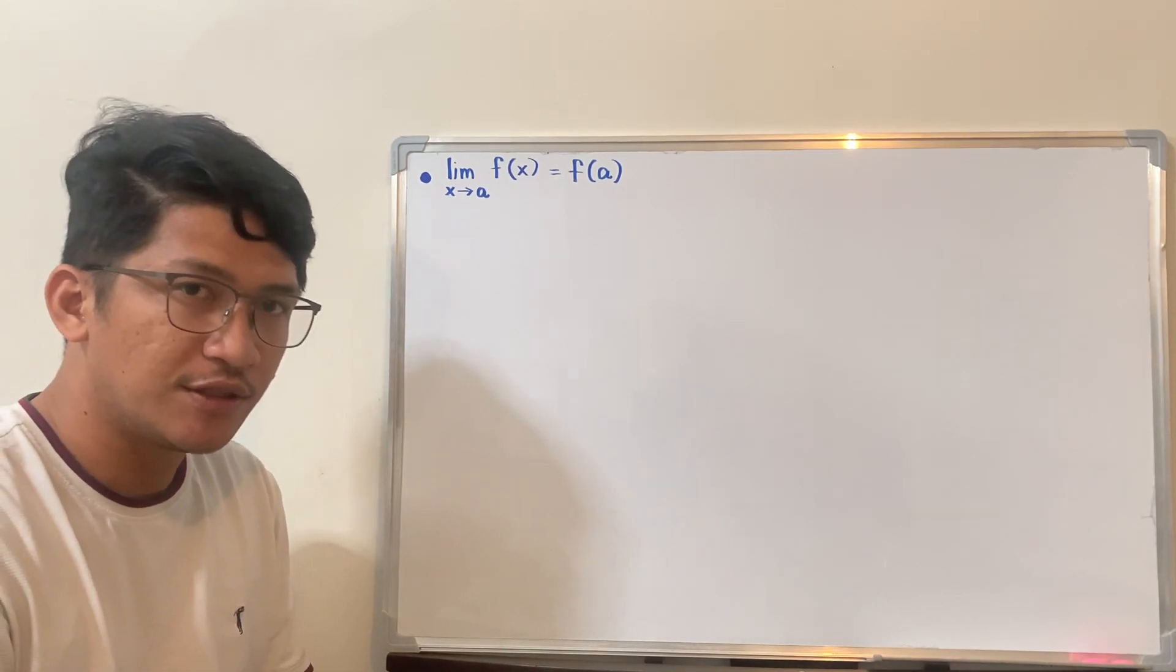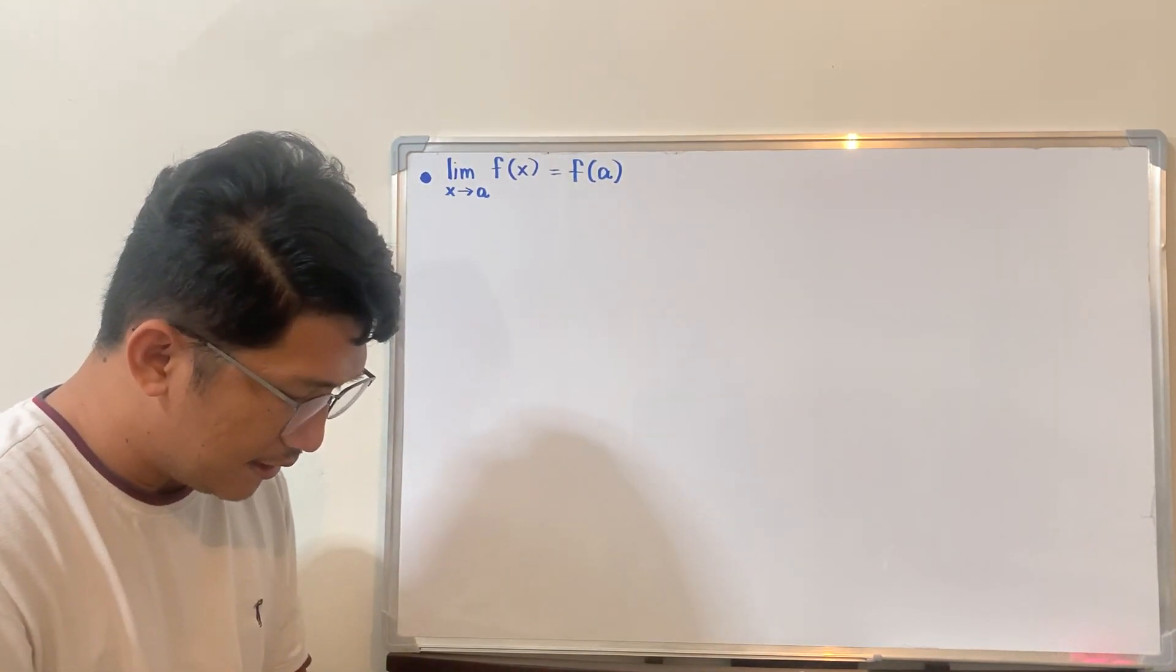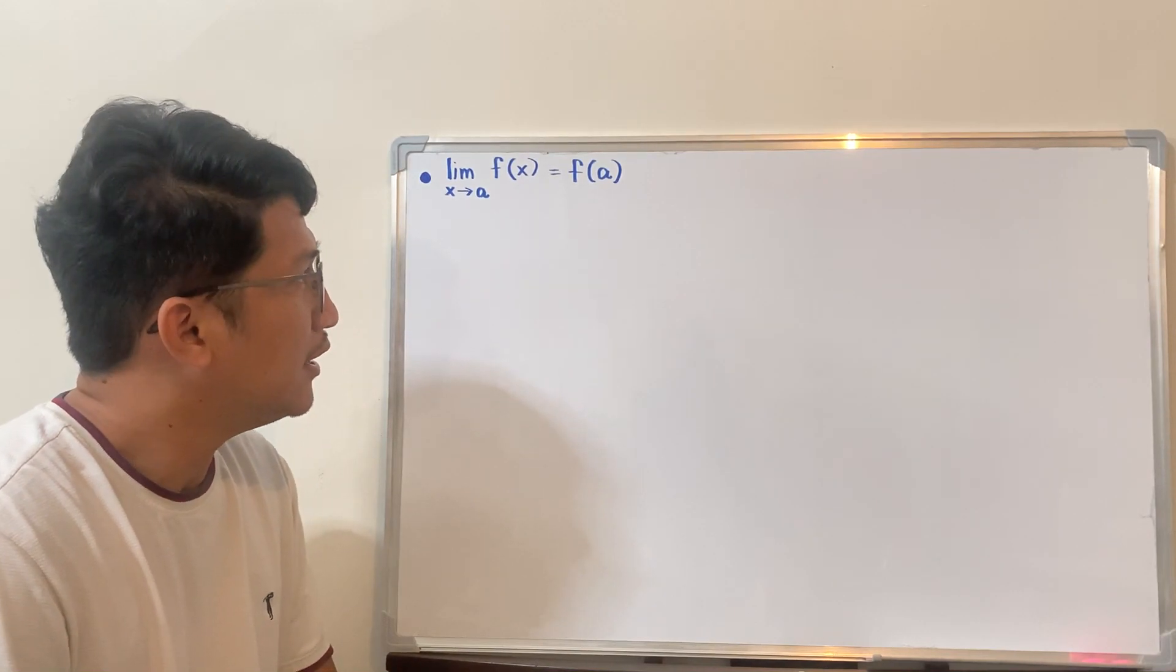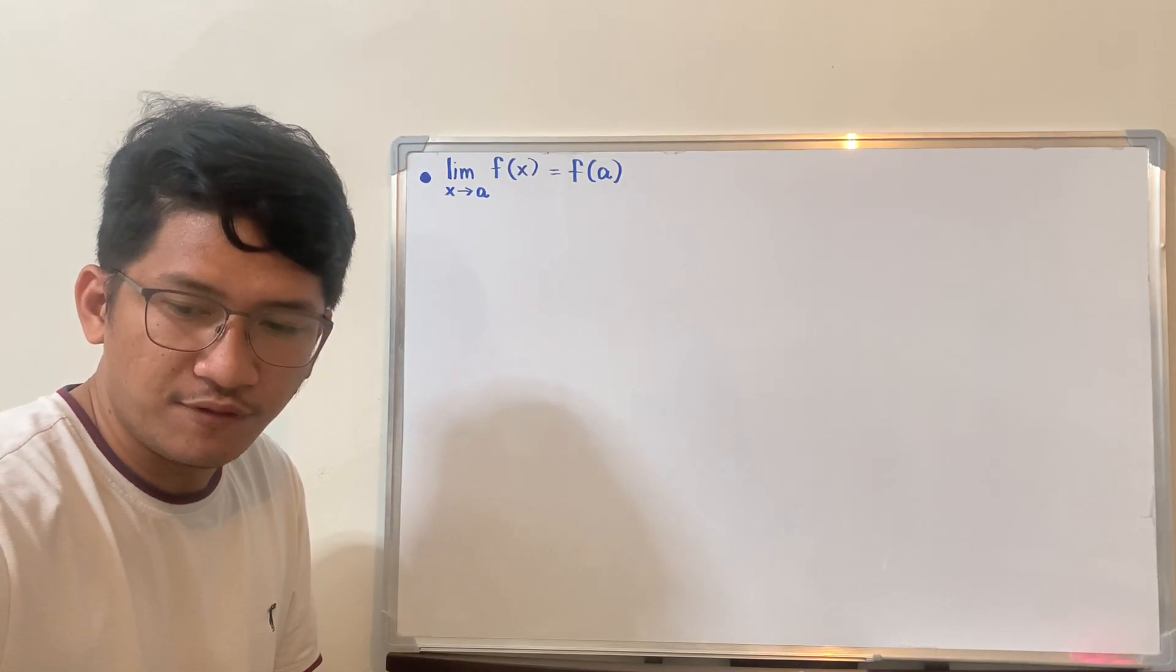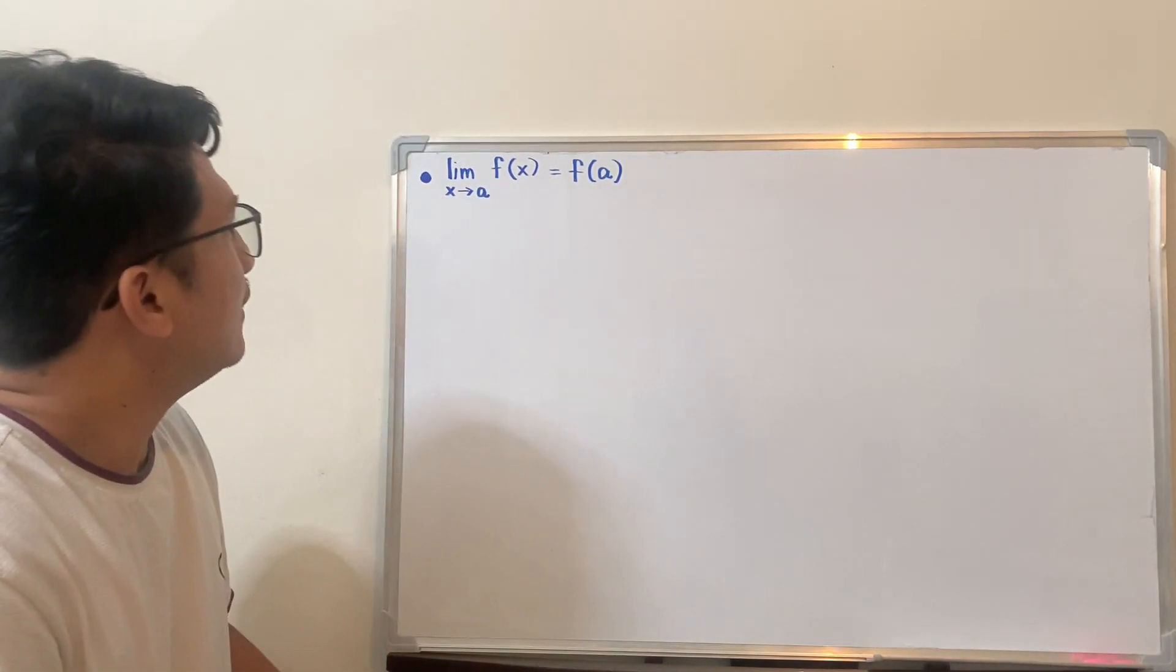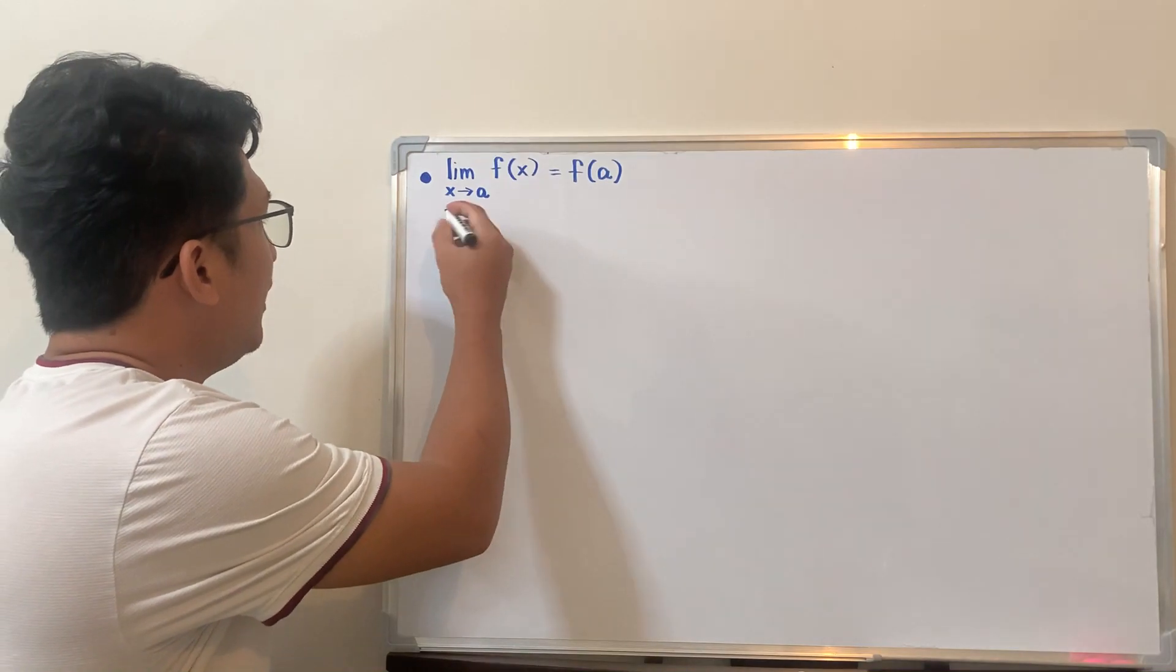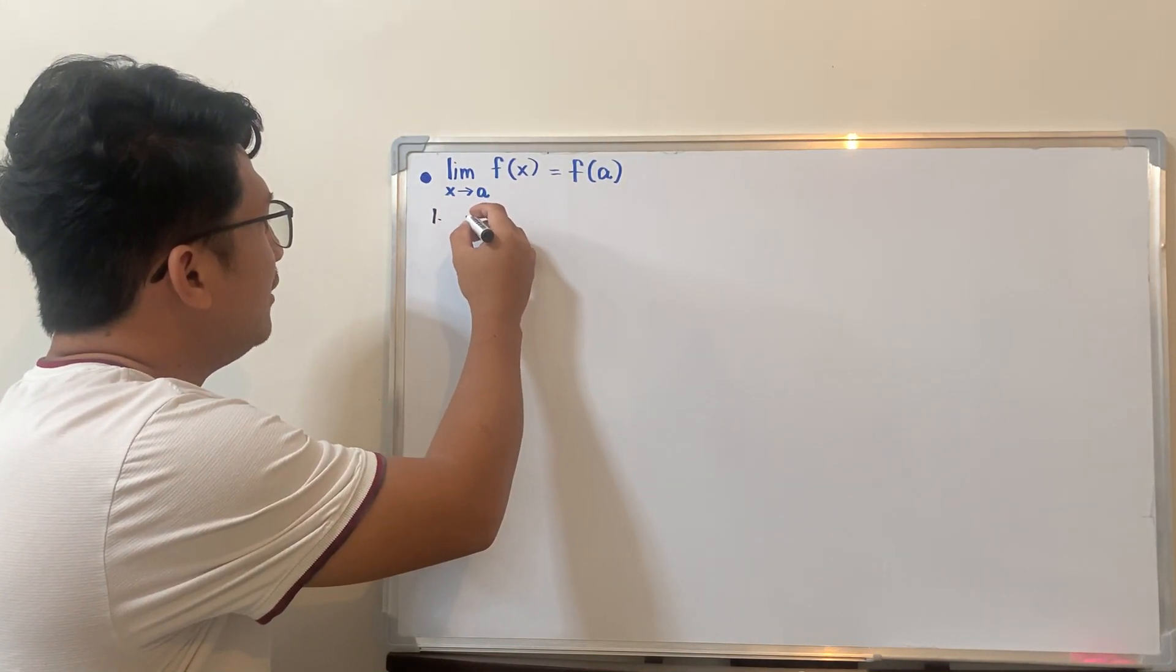But of course there are limitations and there are things that you should remember. First, if the function is polynomial, the result will always be a real number. So, if it's polynomial, recalling hopefully you remember polynomial functions. If not, then you must review polynomial functions. So, example, find the limit of, say, 3x cubed,